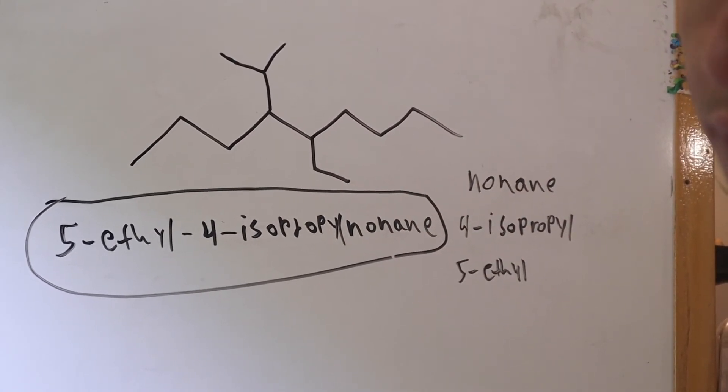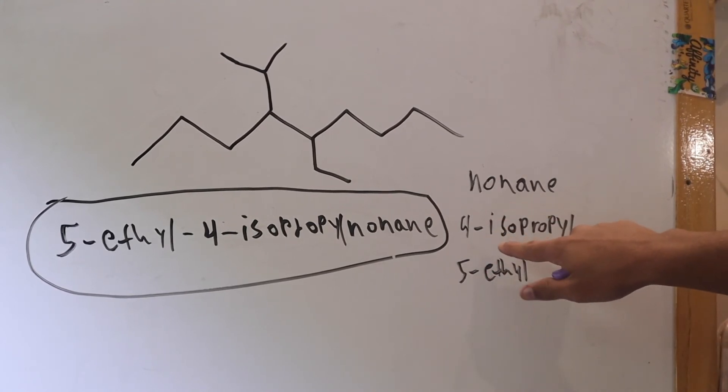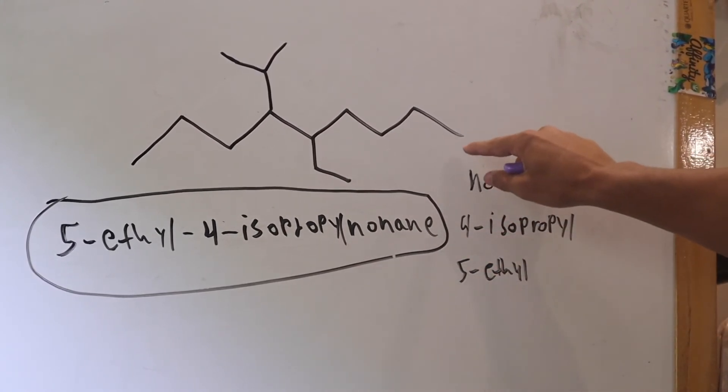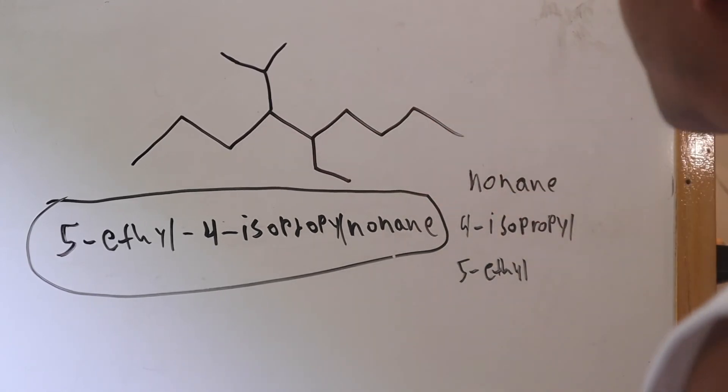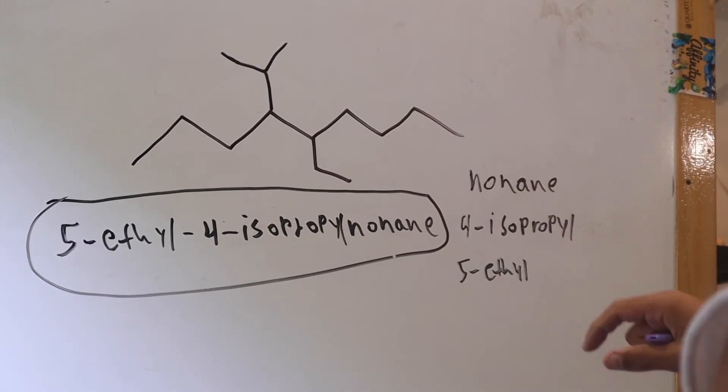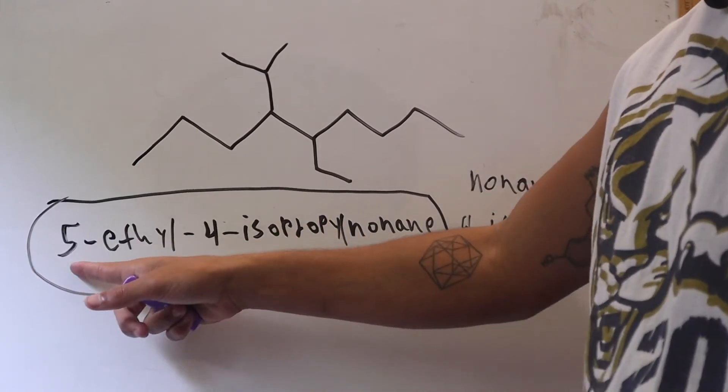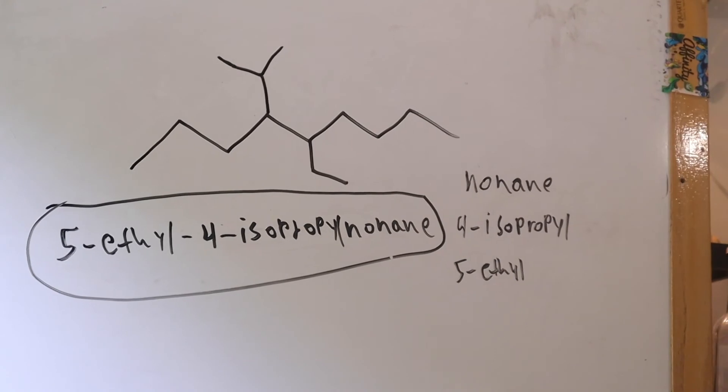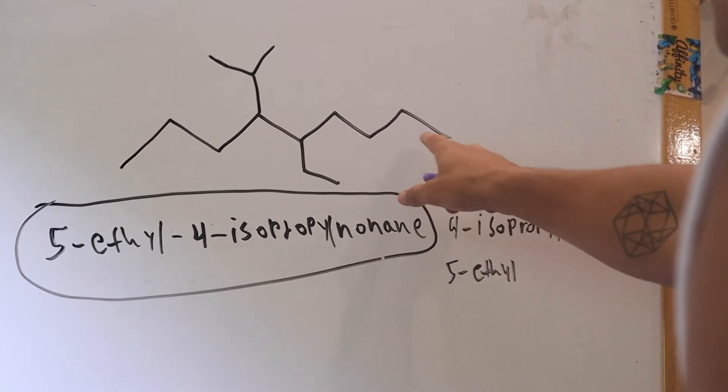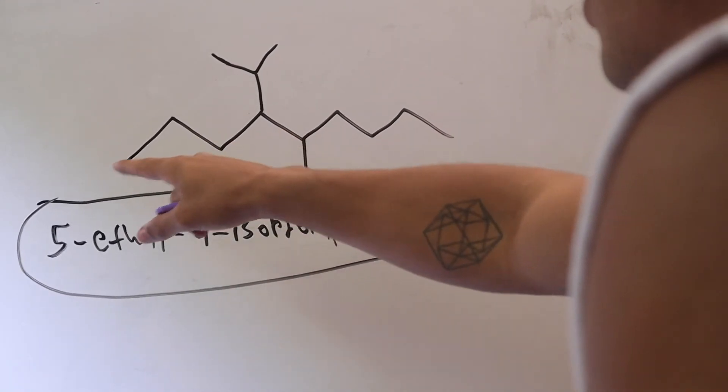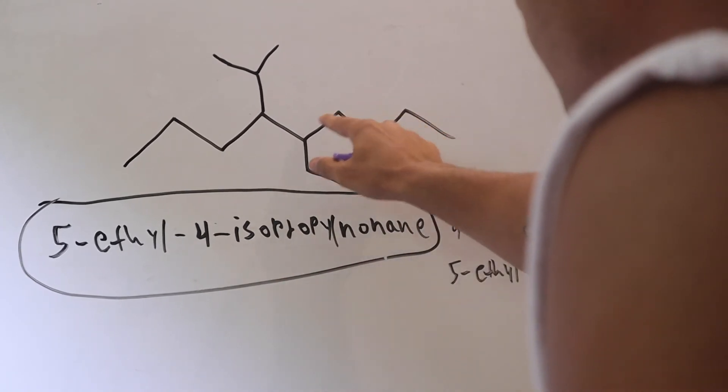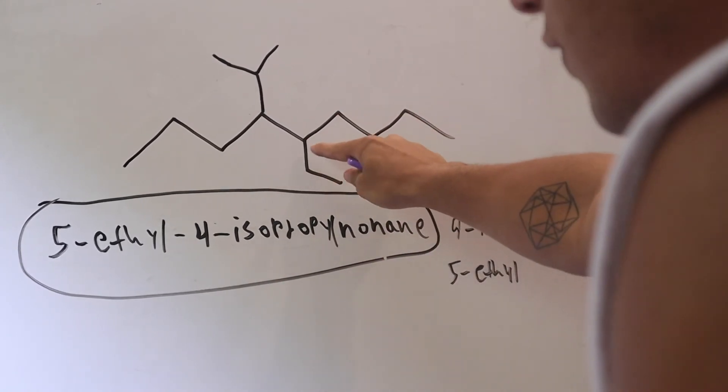So remember, the reason why isopropyl is on 4, instead of 1, 2, 3, 4, 5, 6, is just because we're looking at, when you're going to number them, put that number of what carbon they're at first, you want to start with the lowest number possible from either the left or the right. So if we went from the right, it would have been 1, 2, 3, 4, 5, where you see the first functional group.